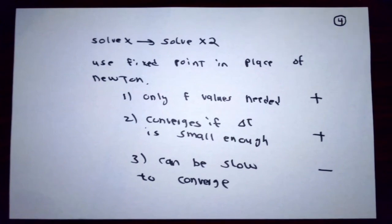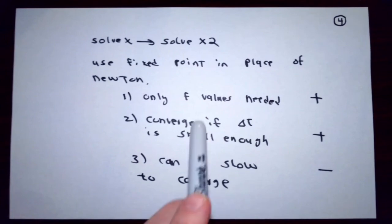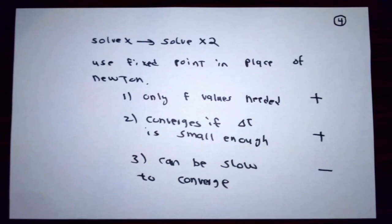There are pluses and minuses to this thought. A big plus is I only need f values; I don't have to ask the user to provide a routine that calculates any partial derivatives of f. Also, if Δt is small enough, then the fixed point method is guaranteed to converge assuming that the partial of f with respect to y is reasonably nice.